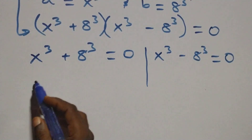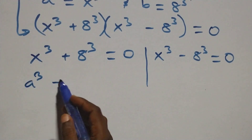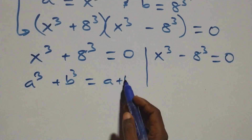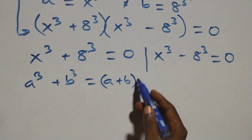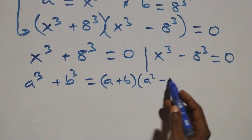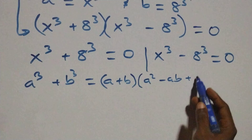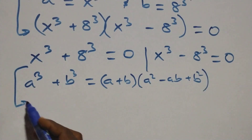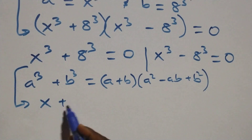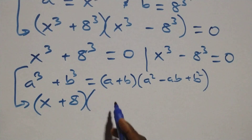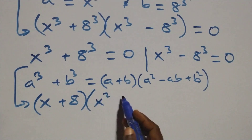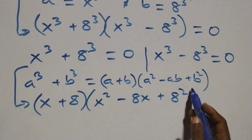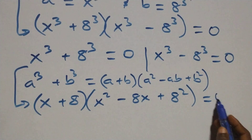Solving on this side, this follows: we have a raised to the power 3 plus b raised to the power 3, which is the same thing as a plus b into brackets, times a squared minus ab plus b squared. So here all we have becomes x plus 8 into brackets, times x squared minus 8x plus 8 squared, equals to 0.